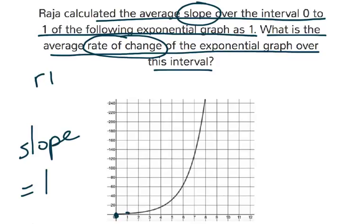Slope, as you know, is rise over run. And rate of change is just how much is the graph changing on the y-axis compared to the x-axis. And so the rise represents the change in y.